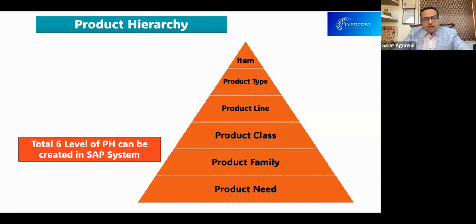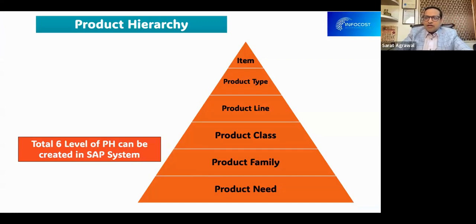In SAP we can have six levels of product hierarchy, wherein we can define the product hierarchy from top to bottom — maybe as per the need of the product, family of the product, class of the product, product line, product type, and the different types of product itself. This is how we can design the product hierarchy, and this product hierarchy is unique and very specific for each business and each organization.